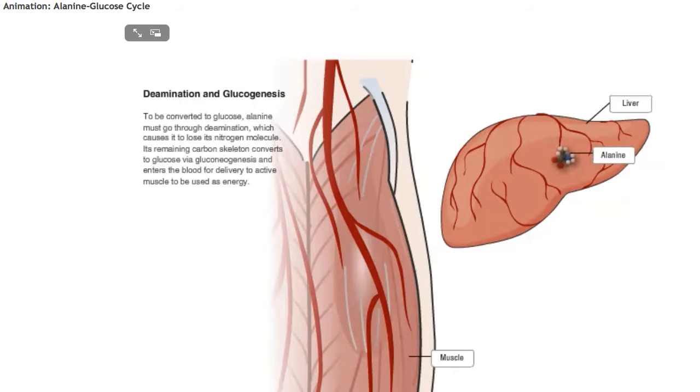To be converted to glucose, alanine must go through deamination, which causes it to lose its nitrogen molecule. Its remaining carbon skeleton converts to glucose via gluconeogenesis and enters the blood for delivery to active muscle to be used as energy.